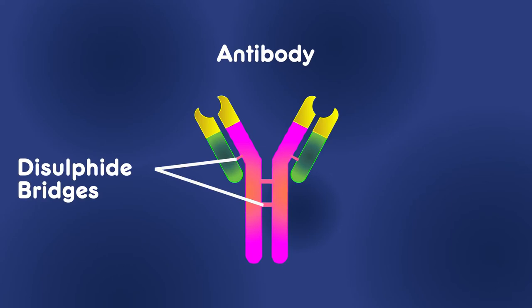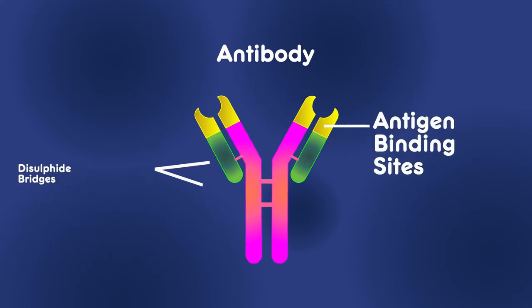Here at the tip of each arm are the antigen binding sites. These are really important parts for attacking invading antigens.